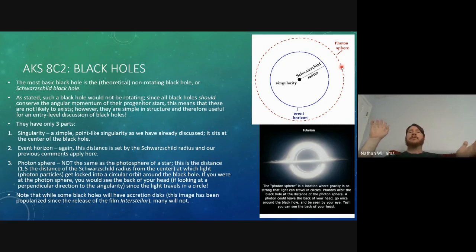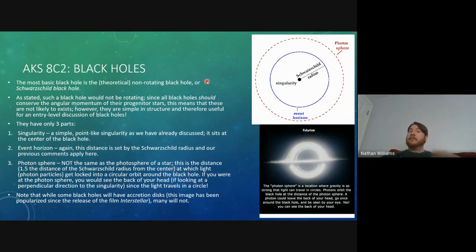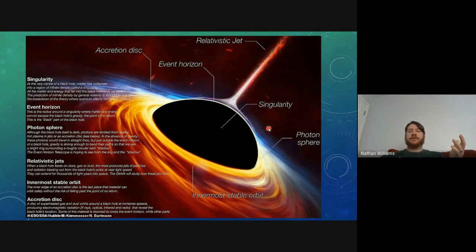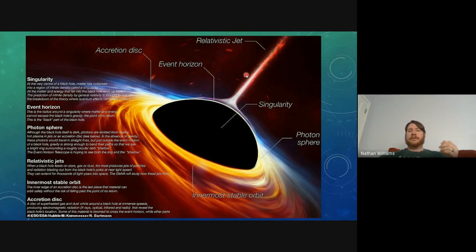The light reflecting off the back of your head would travel in that circular orbit and loop back around to your face — weird but fascinating stuff. Thanks to Interstellar, the visual aspect of the photon sphere is at least somewhat well known. A diagram here shows a thinner photon sphere depiction along with an accretion disk and relativistic jets, which may or may not be present on a given black hole — we'll discuss those more later.